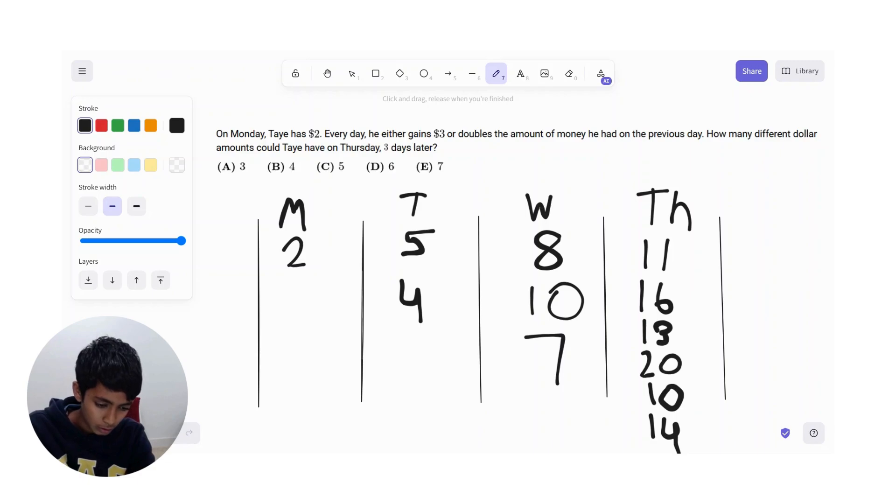Now let's count. One, two, three, four, five, six. Six different values. There are six different values that Tay could have on Thursday. So our answer is D, six.